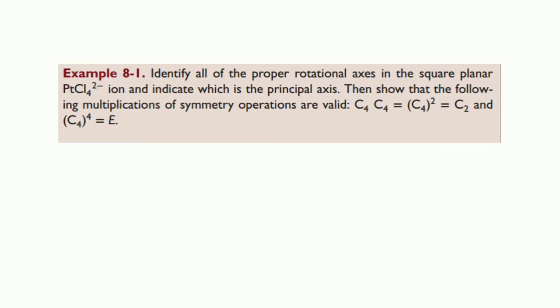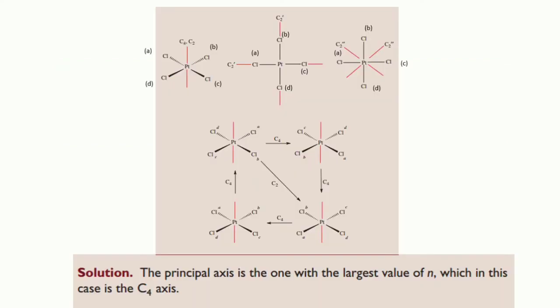Now moving on to the third symmetry element: reflection. Reflection occurs when an equivalent configuration results from an object being reflected an equal distance through a mirror plane. The reflection operation is given the symbol sigma (σ). The benzene molecule, for example, has a rather obvious mirror plane that lies in the plane of the molecule itself and is perpendicular to the principal axis, as in figure A.